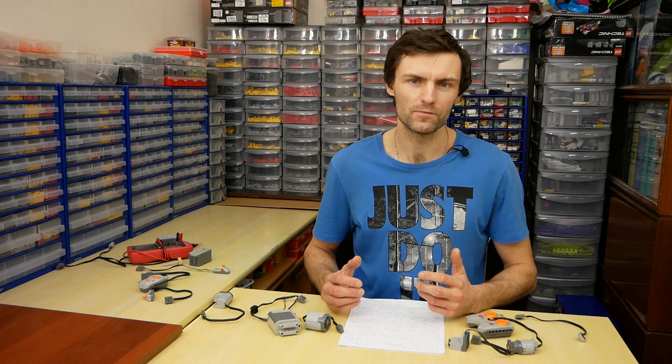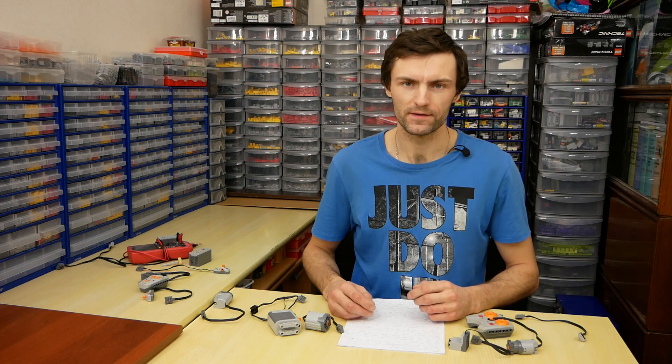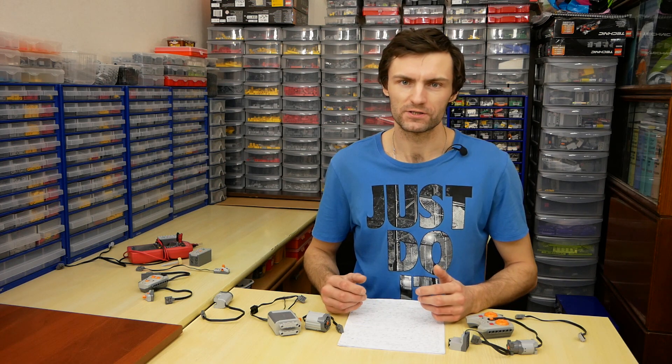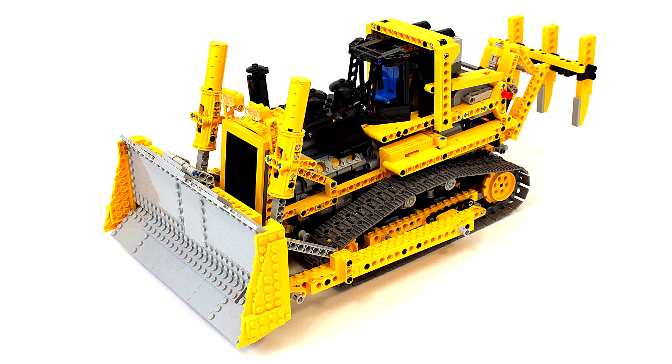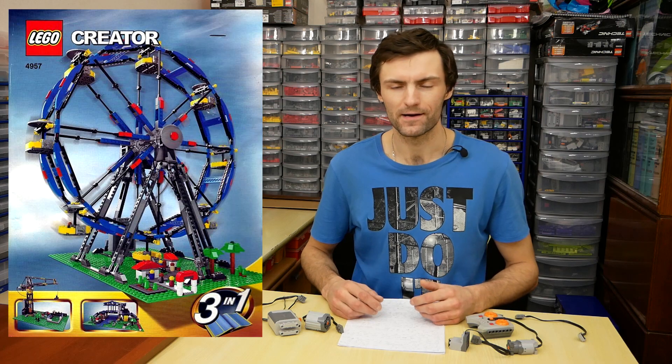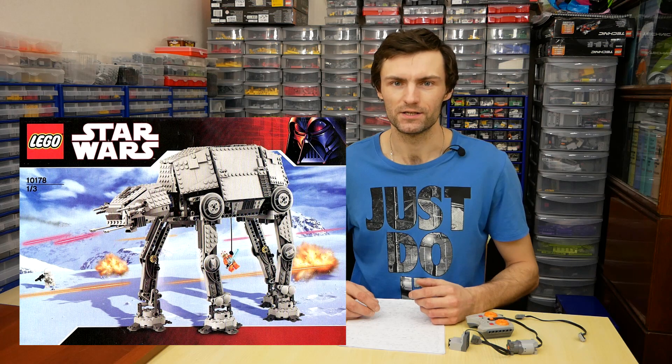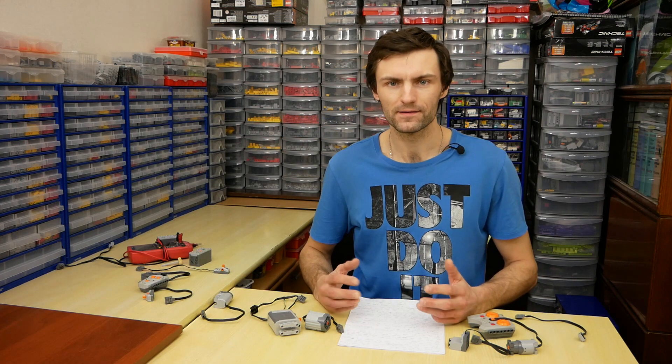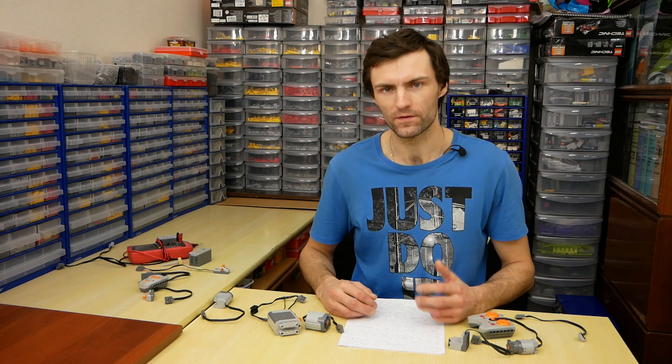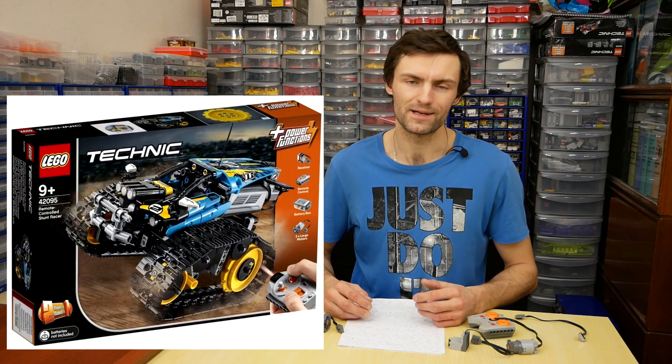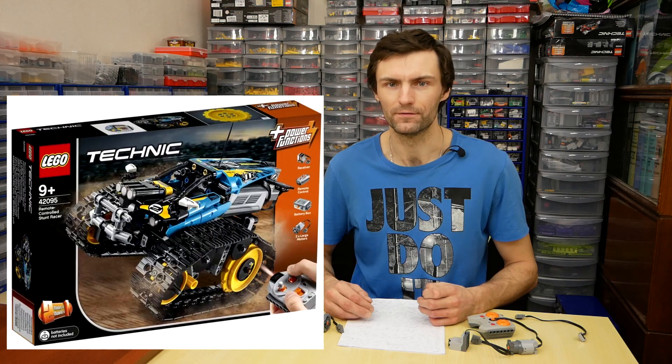Power function system was introduced in 2007 year in 5 sets. My first set with power function system is LEGO Technic Dozer 8275. Other first sets are Ferris wheel, Education add-on, Monster Diner and Walking AT-AT. And the final set with power functions system was introduced in 2019. It is a remote-controlled Stunt Racer 42095.